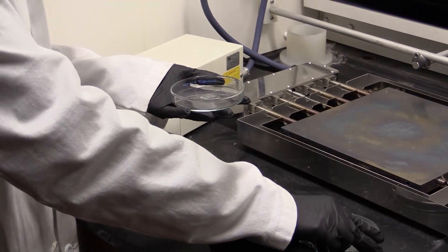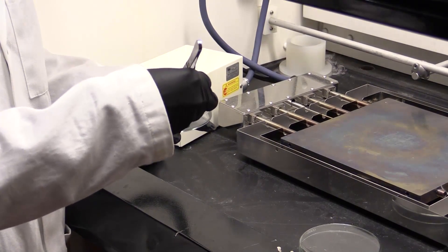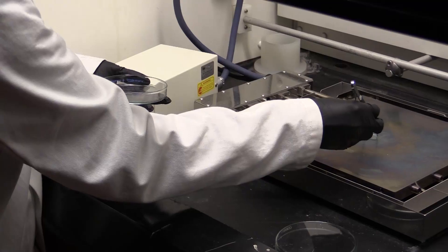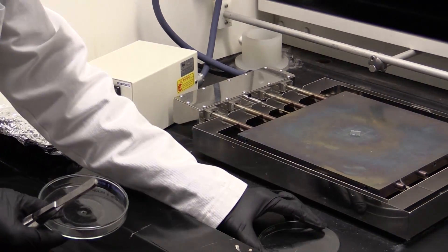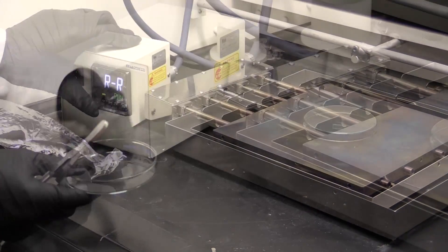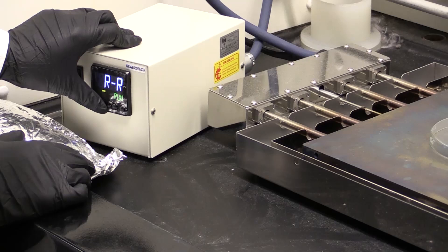After spin coating, we anneal the TiO2 sol-gel film on a high temperature programmable hotplate. This is the program for annealing the TiO2.